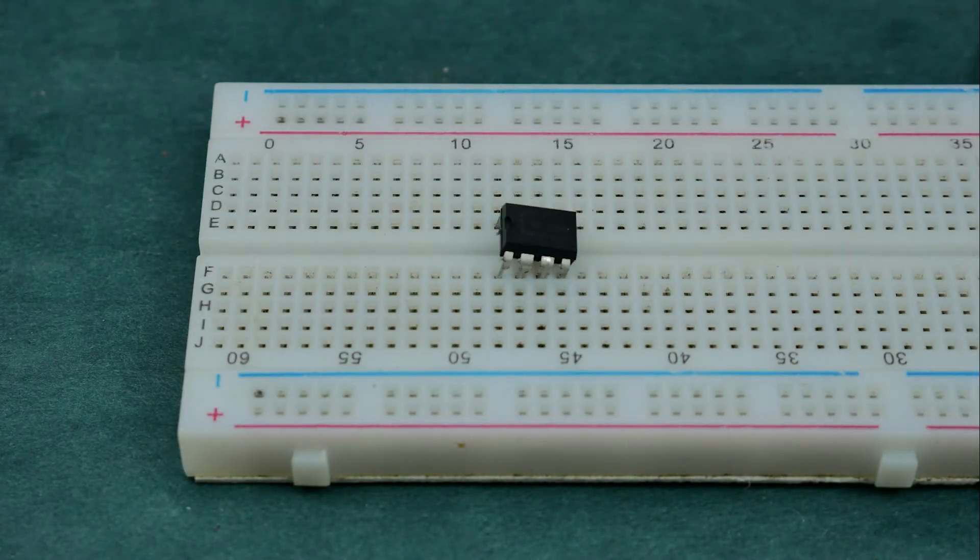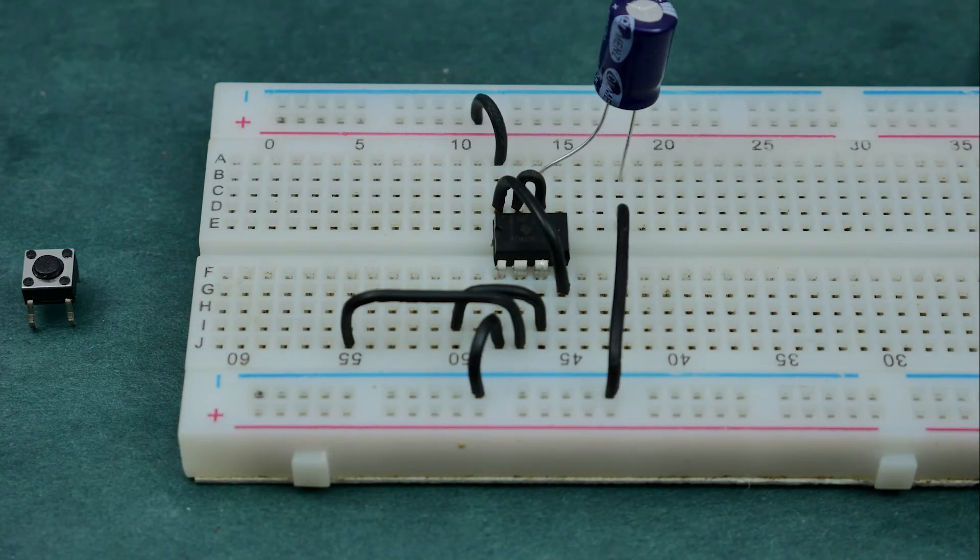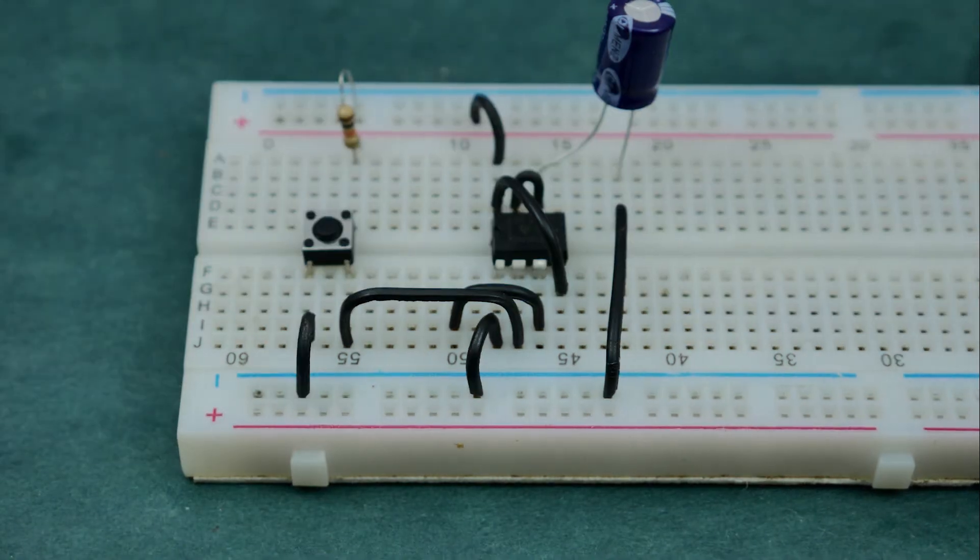Hi, welcome to Ulonix. In this episode, we'll make an adjustable delay timer circuit using a 555 timer IC.